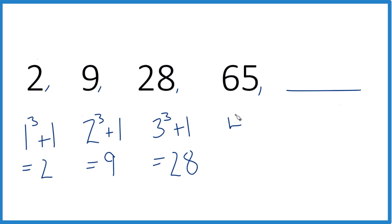And then 4 to the third power, we said that was 64. 64 plus 1 equals 65. So we would expect, if we followed this pattern, 5 to the third power plus 1.